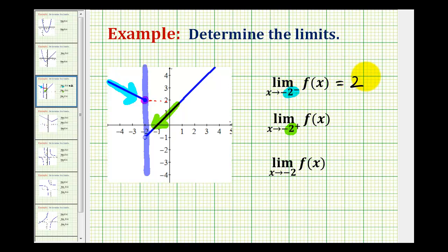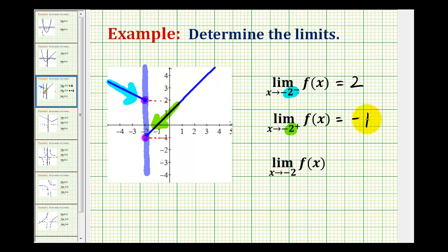But notice when approaching negative 2 from the positive side or the right side, we're approaching along here, so now we're approaching this point here, which means we're approaching the function value of negative 1. So the right-sided limit is equal to negative 1.